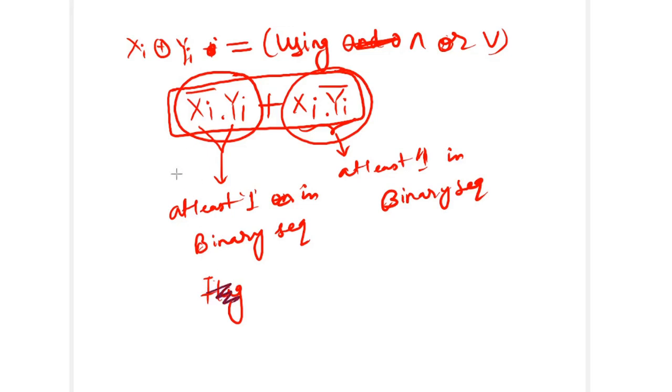So we will keep this, this can be kept track using flag or temp variable to know that which of this will have at least 1 in binary sequence.